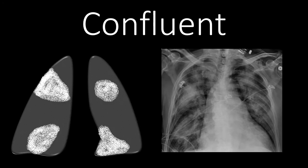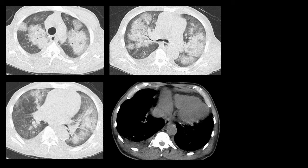Confluent is different than patchy in that it involves a greater proportion of the lung in a contiguous way. These airspace opacities are big, dense regions that may involve almost an entire lobe or an entire segment of the lung. On the chest CT, we can see large areas of consolidation. The consolidation is confluent and dense, with some scattered areas of ground glass opacity, but predominantly this dense confluent airspace filling.